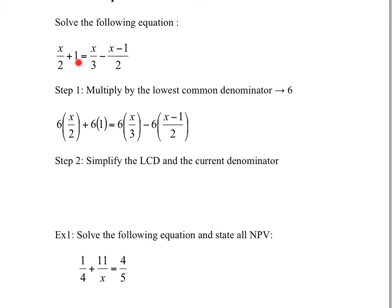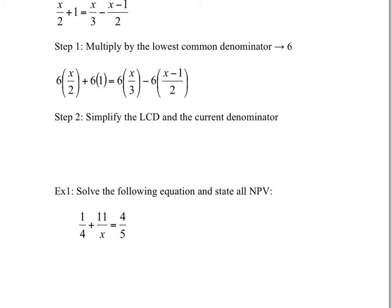Notice I multiply every single term by 6 — I even multiply the 1 by 6 — because technically I'm multiplying 6 on both sides of the equation to make sure it balances out. Now we're going to simplify the lowest common denominator with the current denominator. So 6 over 2 gives us 3. There's no denominator on the middle term. And 6 over 3 gives us 2. Then 6 divided by 2 gives us 3.